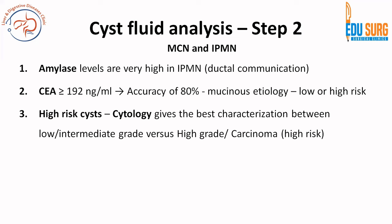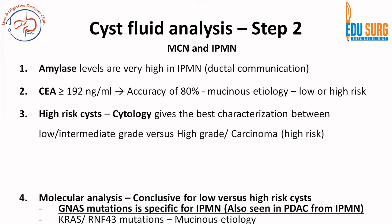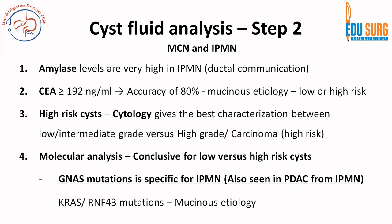Now you want to understand if it is high risk or low risk - the best characterization is given by cytology and molecular analysis. Four important cyst fluid steps: amylase, CEA, cytology, and molecular. In molecular analysis, there are markers that suggest mucinous etiology - KRAS and RNF43 - these two suggest that the cyst is mucinous, and GNAS mutations are specific for IPMN or malignancy arising from IPMN. PDAC is pancreatic ductal adenocarcinoma. If there is an established solid tumor in IPMN, GNAS will still be mutated - only IPMN GNAS will be mutated.